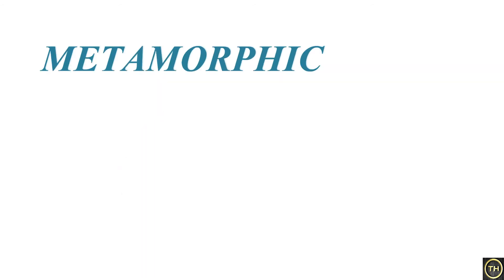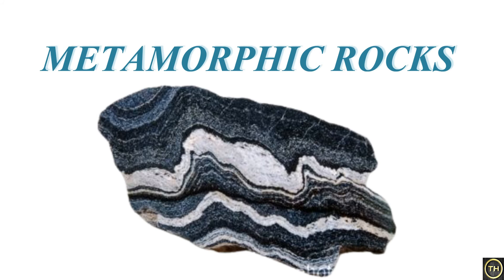The third type is metamorphic rocks. Volcanic activity and other Earth movements constantly take place on the Earth. While these are occurring, the igneous and sedimentary rocks in that region are subjected to tremendous pressure and heat. This leads to changes in the nature as well as the chemical composition of the original rocks. The crystals in the original rock get re-crystallized — meaning the rocks get metamorphosed. The rocks formed through such a process are called metamorphic rocks. These rocks do not contain fossils and are very heavy and hard.